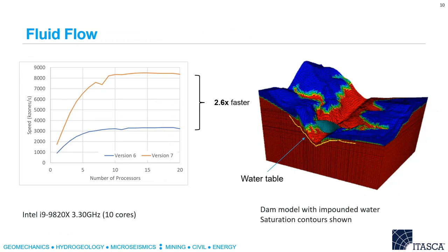For fluid flow calculations the speed ups are more significant. Version 7 for the example I tested was about 2.6 times faster than version 6, so a three-hour problem becomes about a one-hour problem. This plot on the right shows a real-life consulting project done with FLAC 3D 7 — modeling a dam with impounded water. The red contours show the saturated region where the impounded water is behind the dam, and they were looking at the stability of this situation.